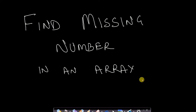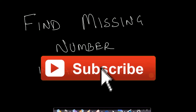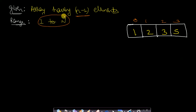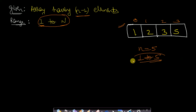Welcome back to Tech Dose. In this video we will look at a frequently asked interview question: find the missing number in an array. The problem is: you have an array of n-1 elements where each element ranges from 1 to n, with no duplicates. For example, given the array [1, 2, 3, 5] where n=5, the missing number is 4 since 4 is not present.